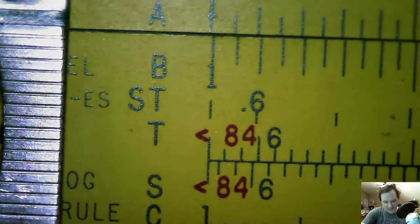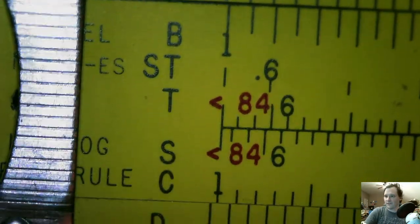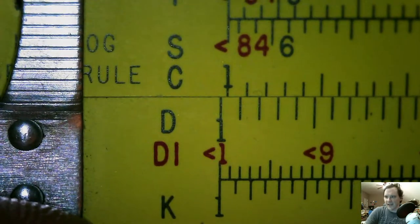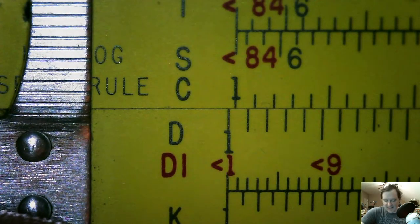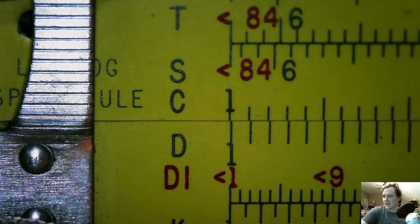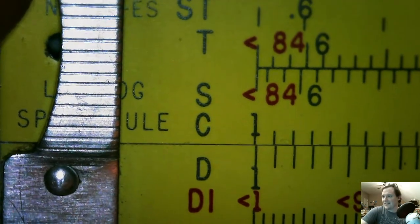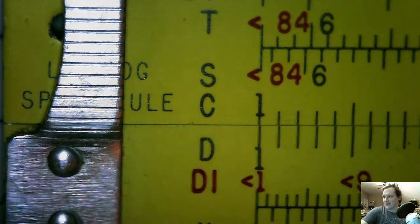Now along the side of a slide rule you'll see letters. Those are known as scales. And the two scales that I want you to be familiar with, let's get this in the shot, are the C and the D scales. And you'll notice that the C and D scales are identical. There we go.